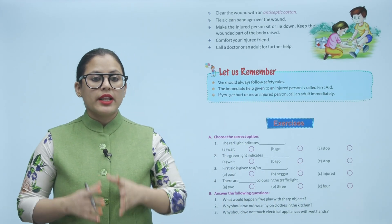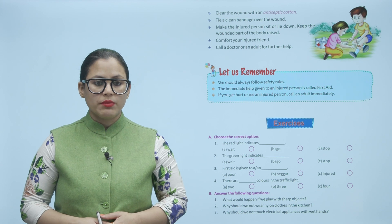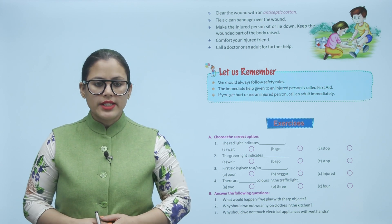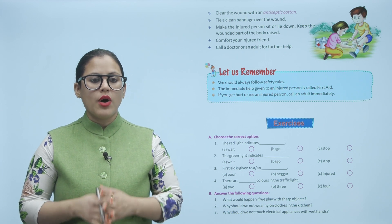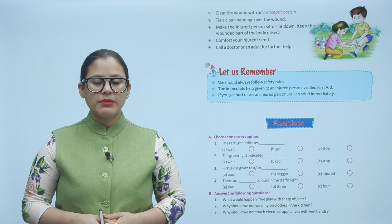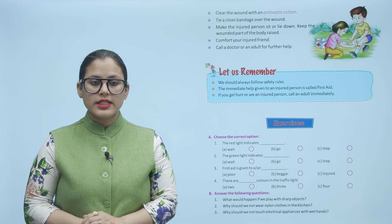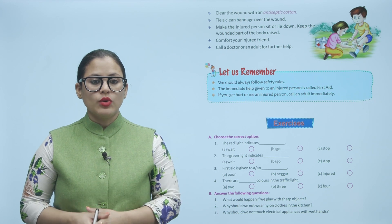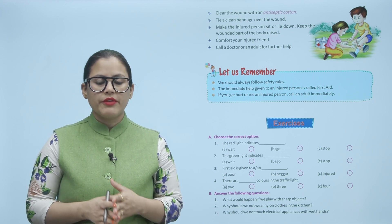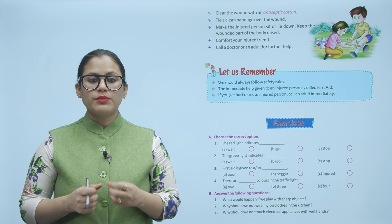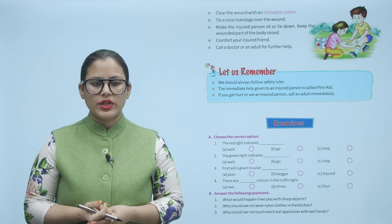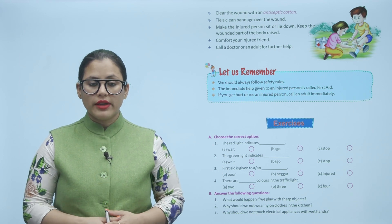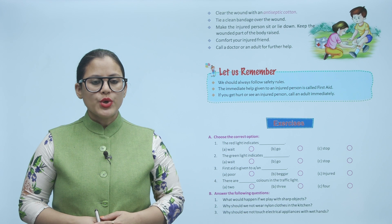Clear the wound with antiseptic cotton. Tie a clean bandage over the wound. Make the injured person sit or lie down and keep the wounded part of the body raised. Comfort your injured friend and call a doctor or an adult for further help. Agar koi ghao hai toh antiseptic cotton se clean karein. Ghao ke oopar clean bandage bandh dein. Injured person ko aaram se bithaein ya litaein, aur wounded part thoda sa raised hona chahiye. Injured friend ko comfort karein aur doctor ya kisi adult ko bulaein aage ki help ke liye.